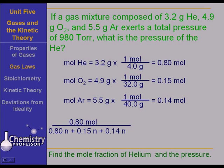Then to find the pressure of helium, we just simply multiply that by the pressure, 980 torr. And when we do, we find that the pressure of the helium by itself is 719 torr. You get the idea?